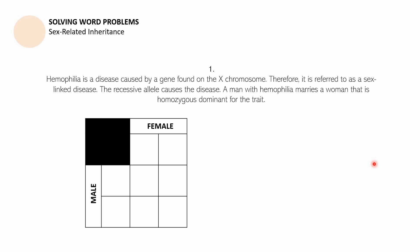Number one: hemophilia is a disease caused by a gene found on the X chromosome. Therefore, it is referred to as a sex-linked disease. The recessive allele causes the disease. A man with hemophilia marries a woman that is homozygous dominant for the trait. Put the missing factors in this Punnett square, look for the genotypes of the four offspring, and answer: will any of the children be hemophiliac? If so, how many of them?